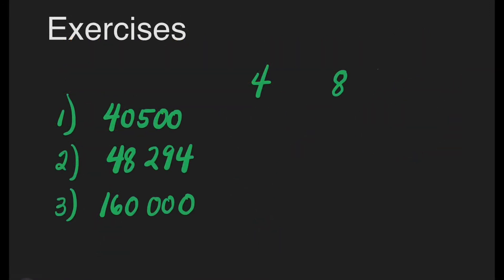We're done. Let us have some exercises. We will be checking the columns if the given number is divisible by 4 or 8. Let's have number 1: 40,500. Is it divisible by 4? Yes, because it ends with 2 zeros. Automatically, it is divisible by 4.